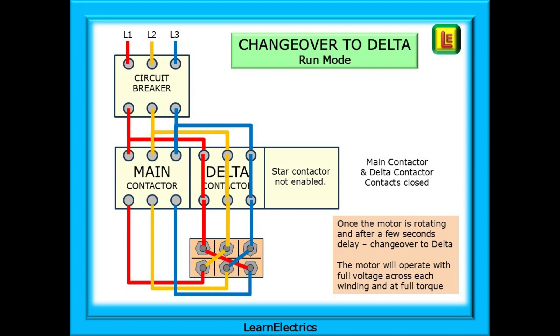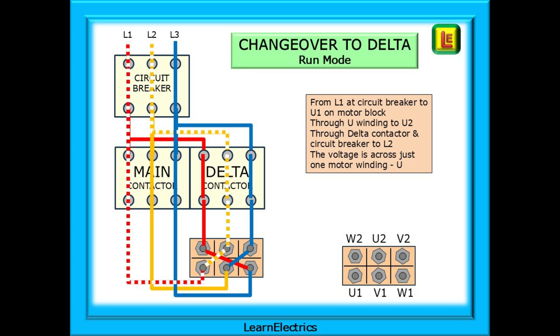Once the motor is rotating and after a few seconds delay, the contactors will change over to delta operation. The star contactor is disabled and the delta contactor comes into circuit along with the main contactor. The motor will operate with full voltage across each winding and at full torque. Follow the route from L1 and back to L2 at the distribution board. The flow is from L1 at the circuit breaker to terminal U1 on the motor block, through the U winding inside the motor to terminal U2, then through the delta contactor and circuit breaker to L2 at the distribution board. The voltage is now across just one motor winding, U in this example, and this happens in rotation with each winding U, V, and W.